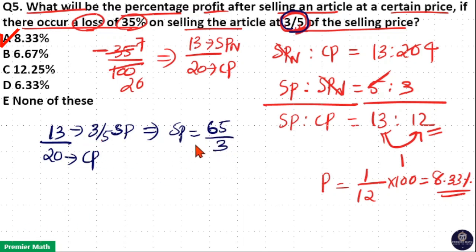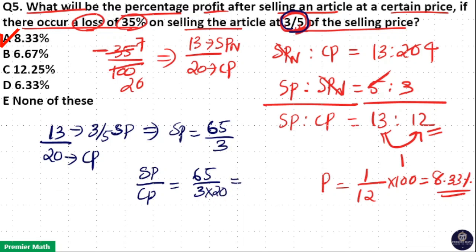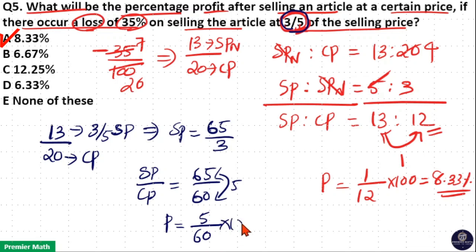Since this is in ratio, take the ratio of SP to CP, which equals (65/3) divided by 20, that is 65/60. So the selling price to cost price ratio is 65:60. The difference between selling price and cost price is 5 units, so profit equals 5/60 × 100. Since 20 goes 3 times in 60 and 5 times in 100, we get 25/3, which is 8.33%. So you can solve this question using either method.